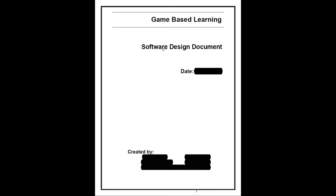This is the cover page of the design document — a software design document with a creation date mentioned. Ideally, the date should be mentioned when the document is created, along with the names of the designers who created it. The date need not be a single date; it can be a history of first creation, then revision, refinement, and final document creation. Ideally, the historical evolution should be recorded in the form of different dates.